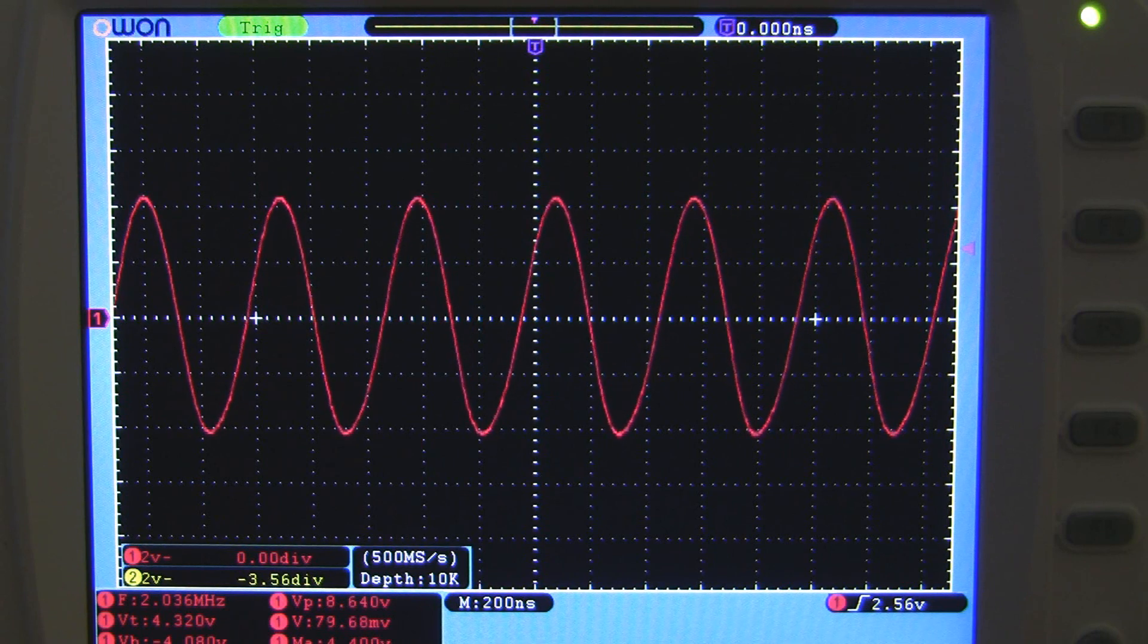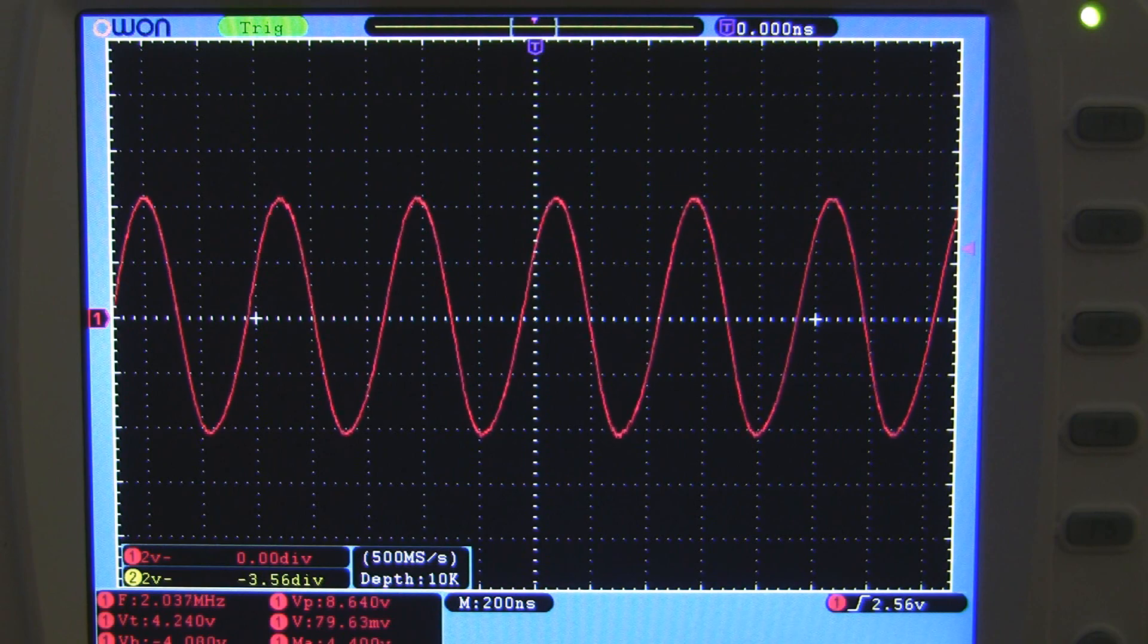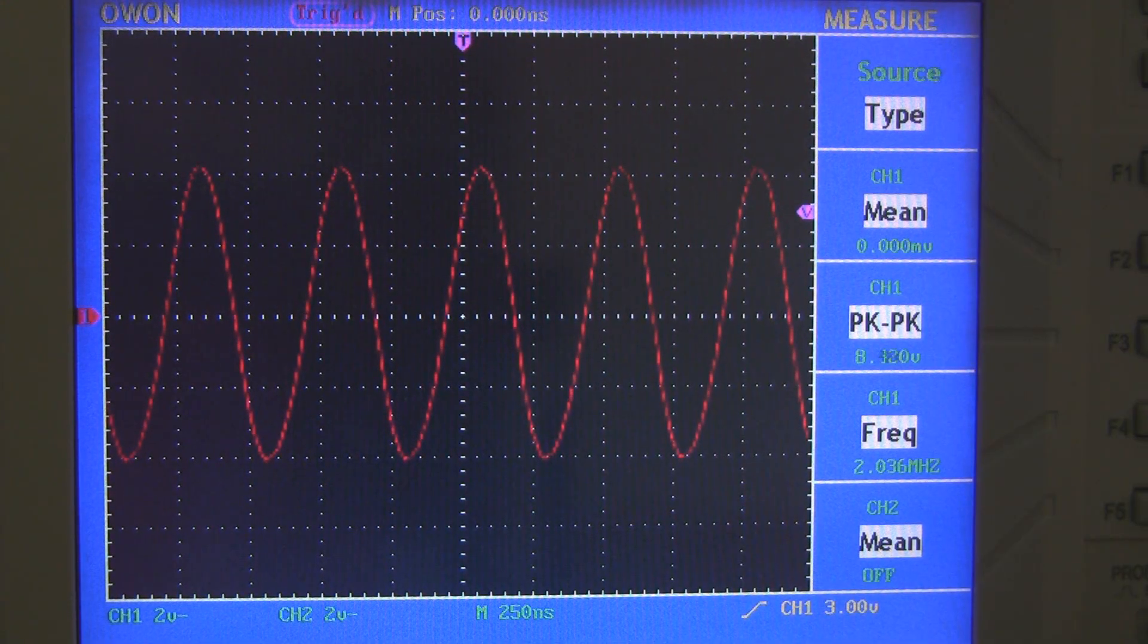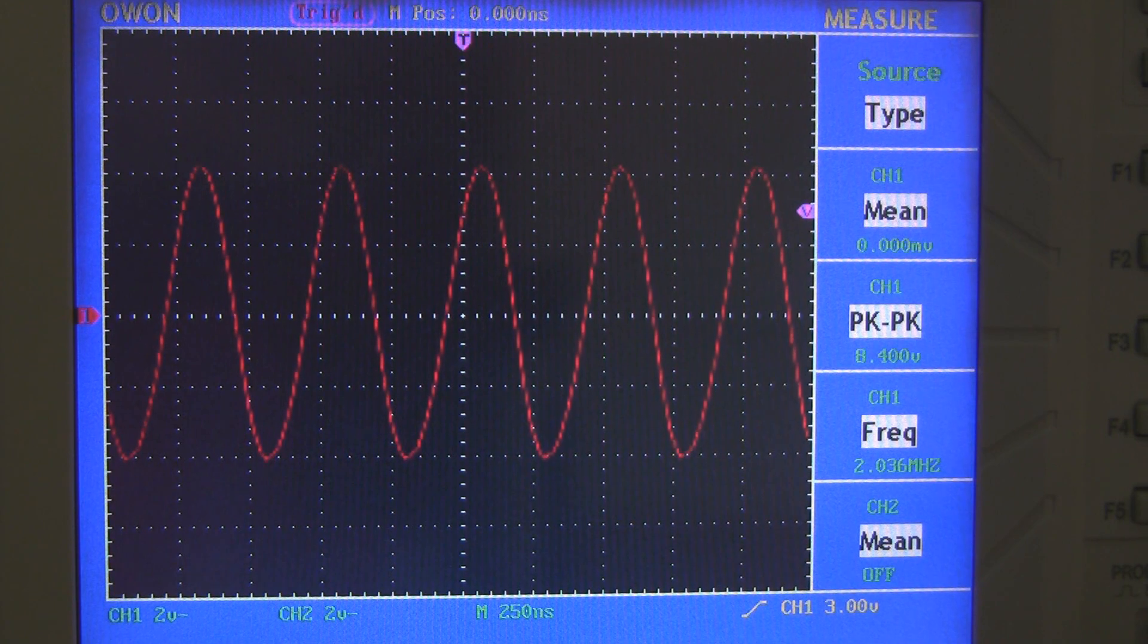Next let's look at the trace quality. Here's a 2MHz sine wave coming from my function generator, and on the SDS it looks very clean and sharp. On the 5022, you still see the same waveform, but there's a slight aliasing effect.